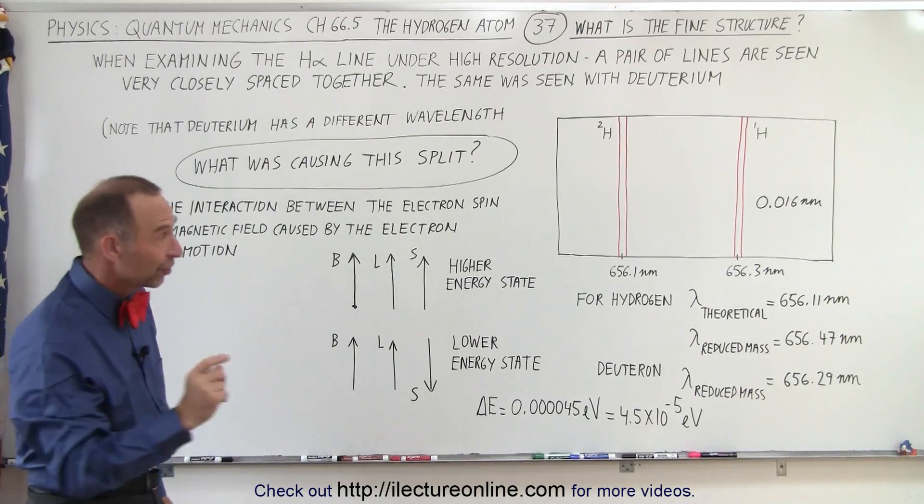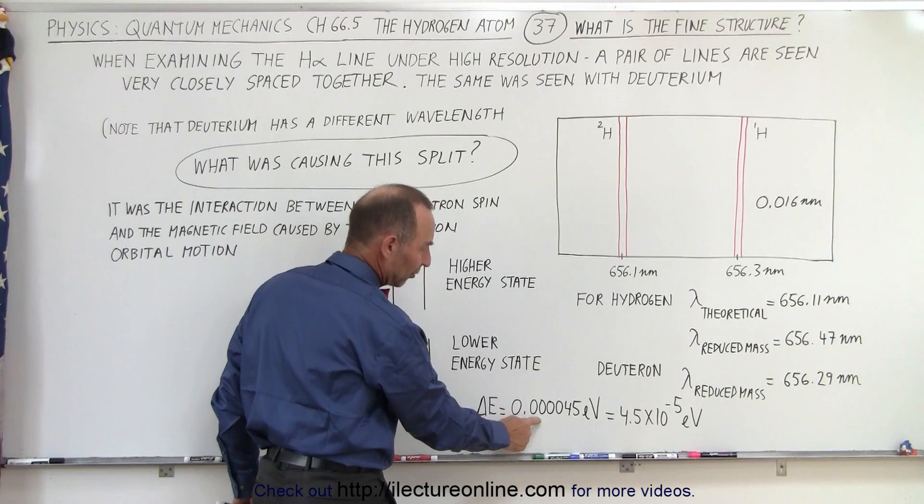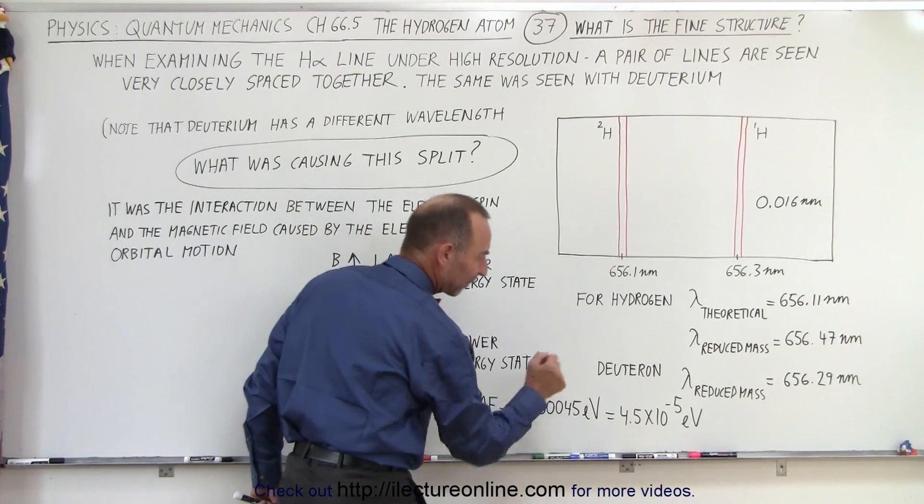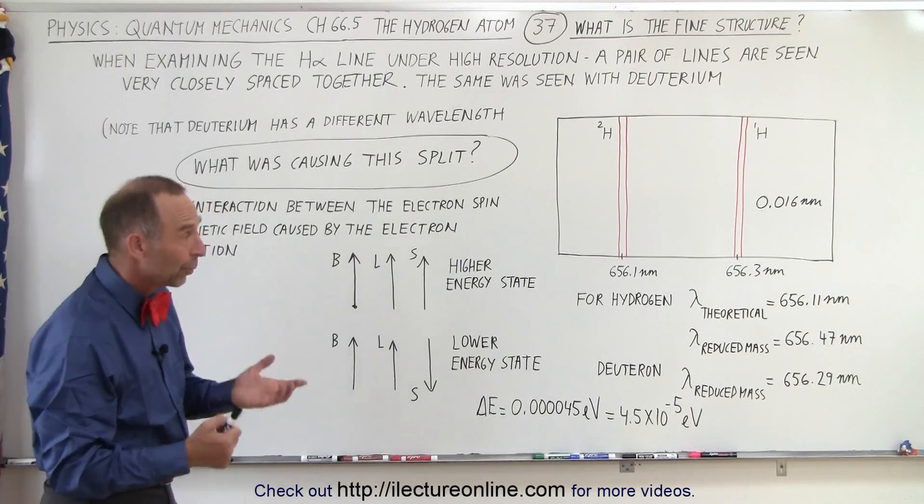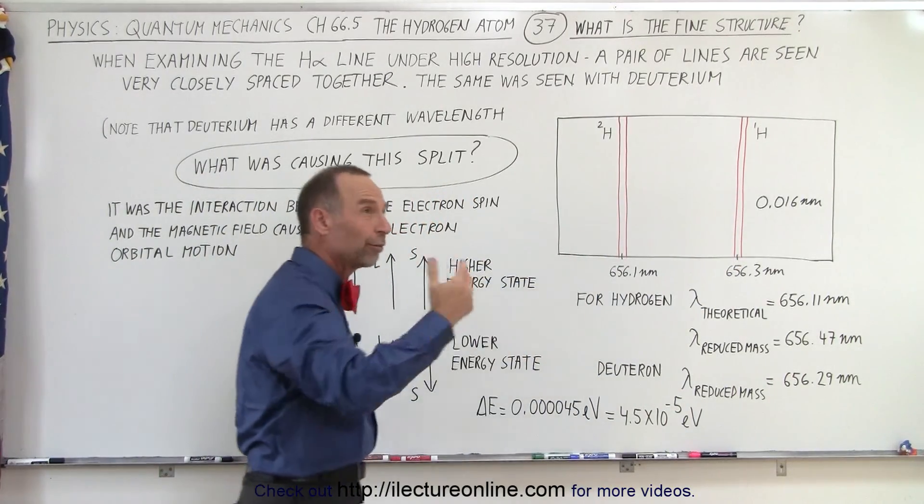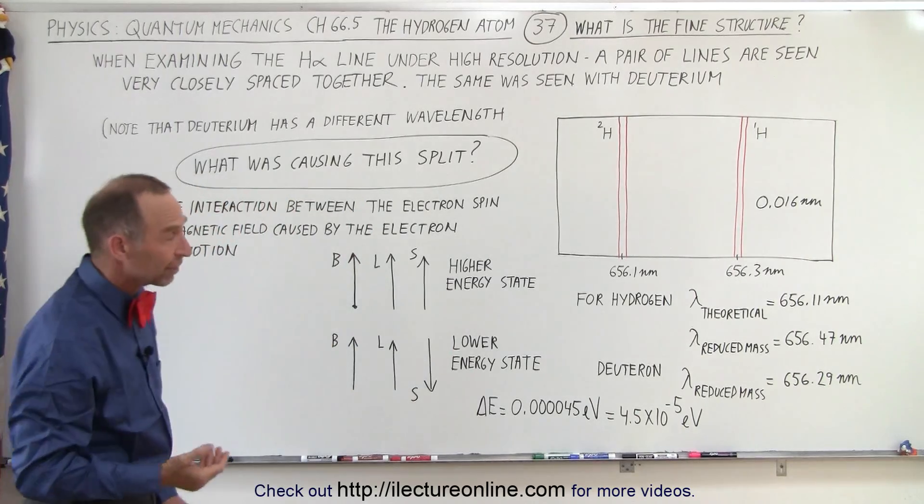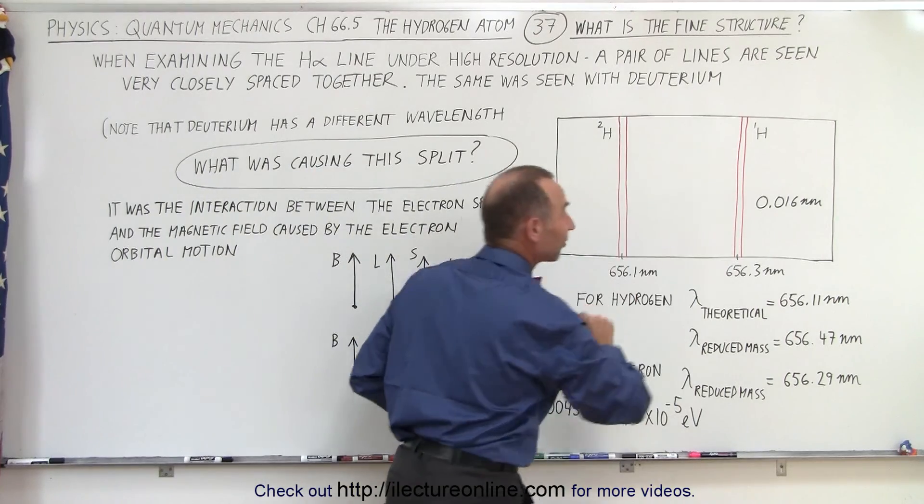Now the energy difference between those two lines represents a very small energy of 0.000045 electron volts, 4.5 times 10 to the minus 5 electron volts. And knowing that the energy of an H-alpha line is typically in the order of about 1.8 to 1.9 electron volts, you can see that's just a very tiny fraction and therefore a very small difference.